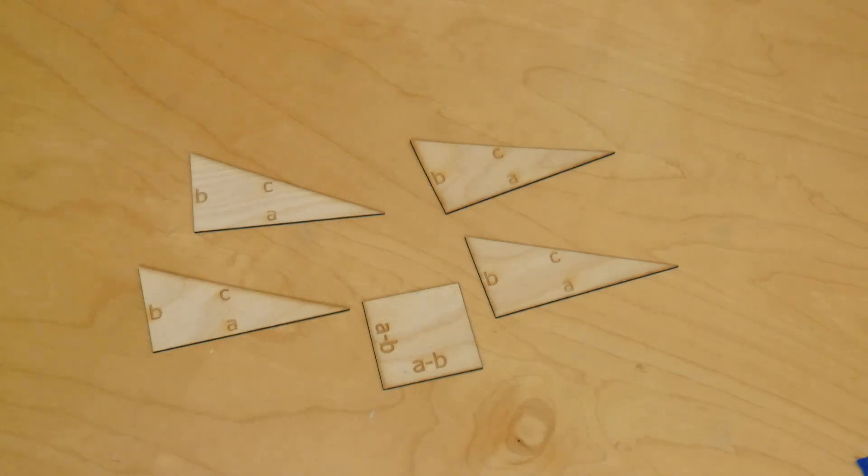So where do we go from here? Let's try something. Let's take these five shapes, four of which are identical, and make a square out of them. So here we go. Ready?